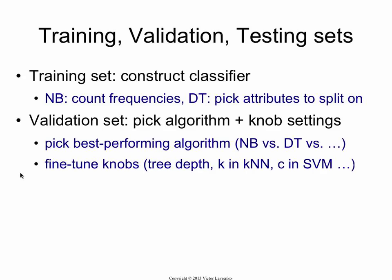Your validation set is what you use to set the knobs. You don't let your classifier see that set, but once it has estimated its tree or its probability table, you fix it, run it on the validation set, and see how well it's done there. You keep doing this while tuning the knob — making it either more rigid or more flexible — to pick a formulation that seems to generalize best from the training to the validation.